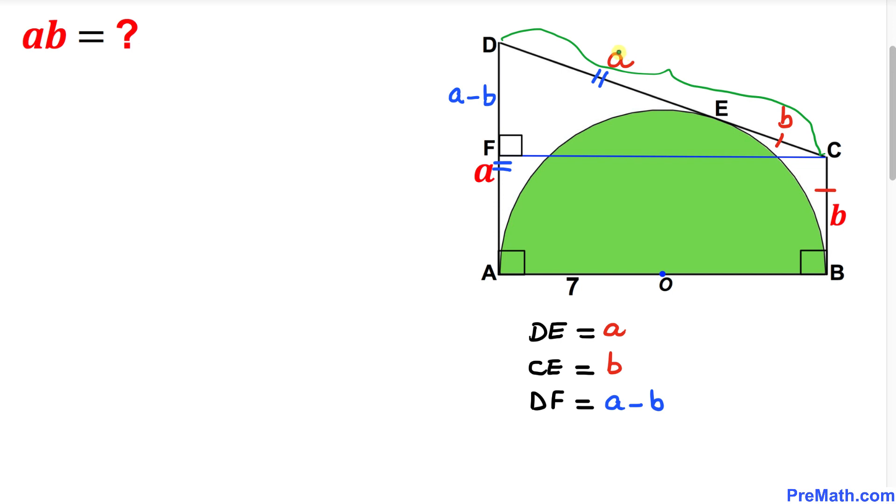Now let's focus on side length DC. This equals the sum of these two individual side lengths, a plus b. Therefore, DC is a plus b. Moreover, we know the radius of this semicircle is 7, so the whole diameter is 14. We know that diameter AB equals line segment FC, so FC is also 14.